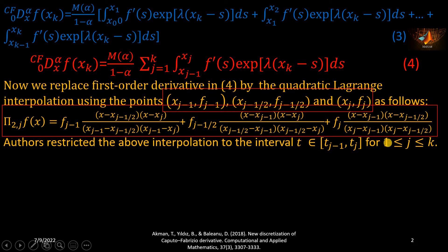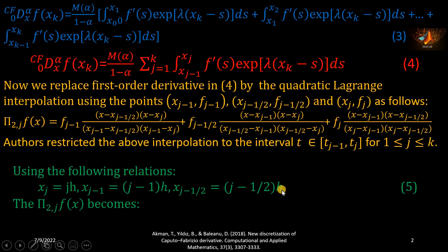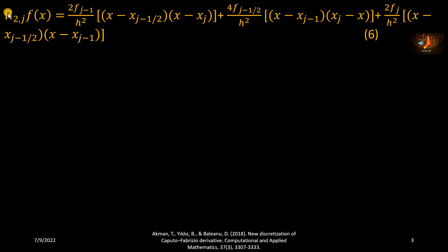Here j starts from 1 and ends at k, as seen in the summation sign. From our knowledge of classical numerical analysis we have the relations in equation 5: since x_0 is 0, x_j can be written as j times h, and similarly for the other two equations. I am going to substitute these relations into the quadratic polynomial, giving equation number 6.